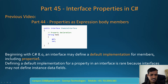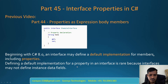Beginning with C-Sharp 8, an interface may define a default implementation for members, including properties. Defining a default implementation for a property in an interface is rare, because interfaces may not define instance data fields.